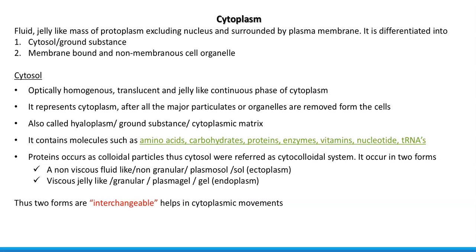First we look at points related to cytosol. Cytosol is optically homogeneous, translucent, and a jelly-like continuous phase made up of cytoplasm. It represents the cytoplasm after all the major particulates or organelles are removed from the cell.